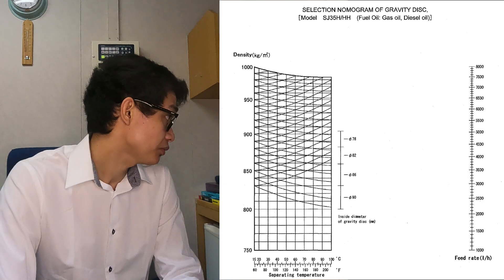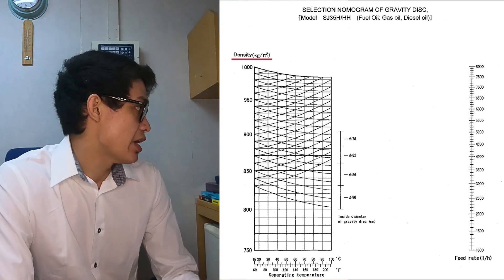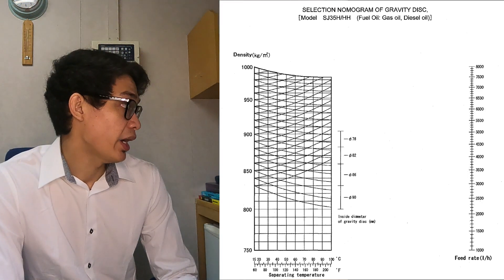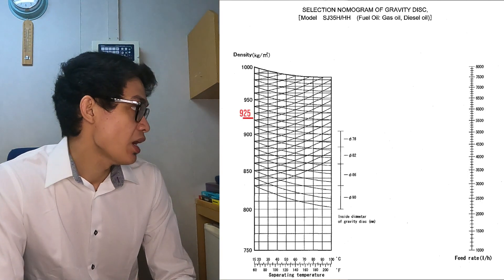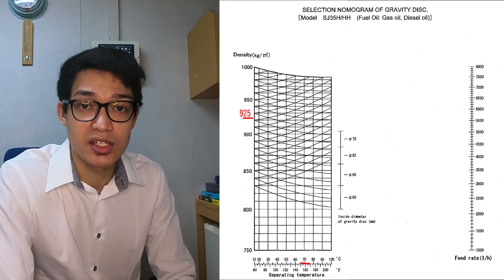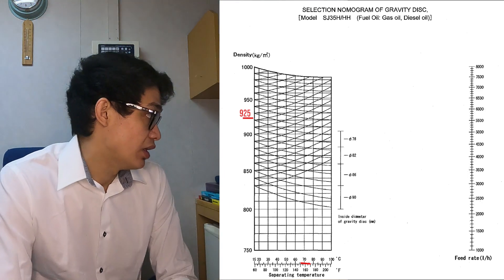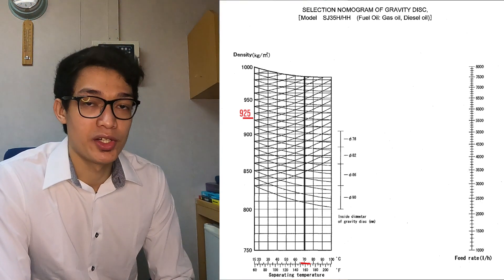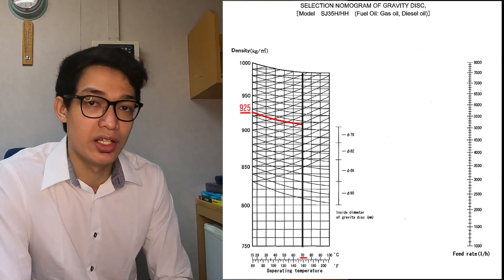This is our purifier nomogram for the self-ejector model SJ 35H-HH. The first thing we need to determine is the location of our given density in the table — it is located in the left part of the table. Our given density is 925 kilograms per cubic meter, which falls between 900 and 950. After locating that density point, we locate the separating temperature of 70 degrees Celsius and draw a vertical line using it as the reference point. Then we draw a falling curve from 925 until it intersects with that vertical line.